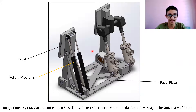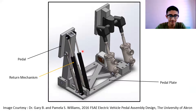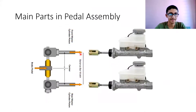Now let's look at how the brake pedal and pedal assembly looks for a Formula SAE vehicle. This is an image from the FSI electric vehicle pedal assembly from the University of Akron team. Since it is an electric vehicle, the clutch pedal is not required, so we only have the throttle pedal and brake pedal. A return arrangement is made and all parts are fixed on the pedal plate.